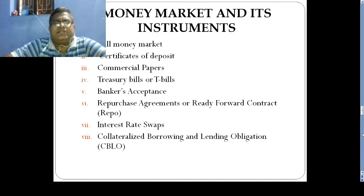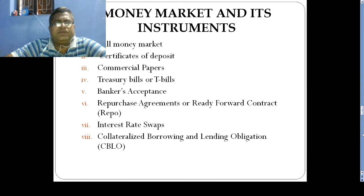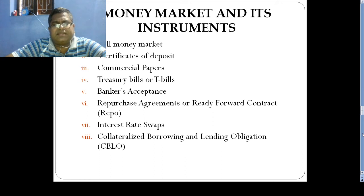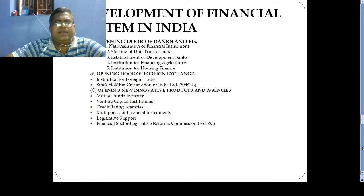Money market instruments — to be discussed in detail in Unit 2 — include: Call Money Market, Commercial Bill Market, Treasury Bill Market, Bankers' Acceptance, Certificate of Deposits, Commercial Paper, Repurchase Agreements or Deferred Contract Deposits, Interest Rate Swaps, and Collateralized Borrowing and Lending Obligations (CBLO).